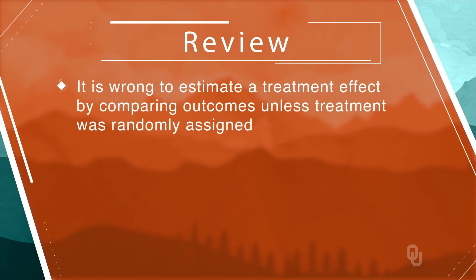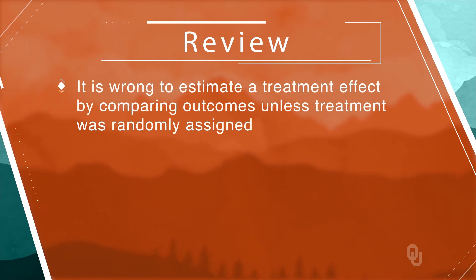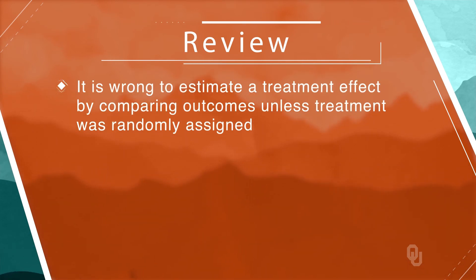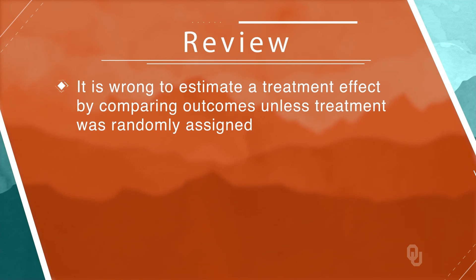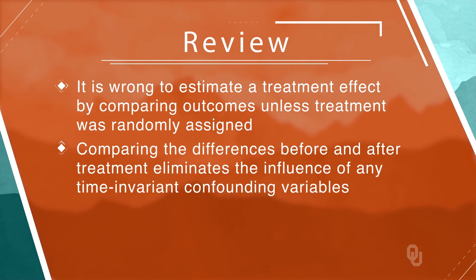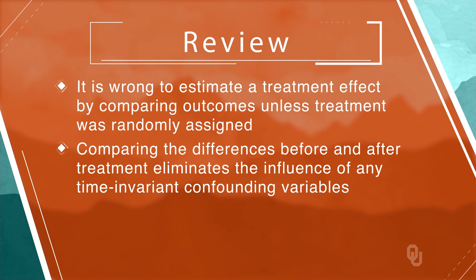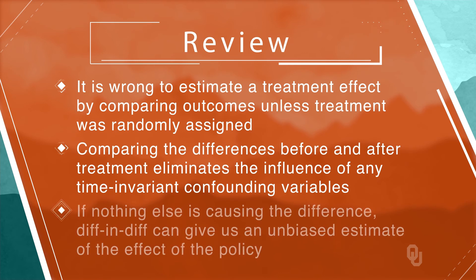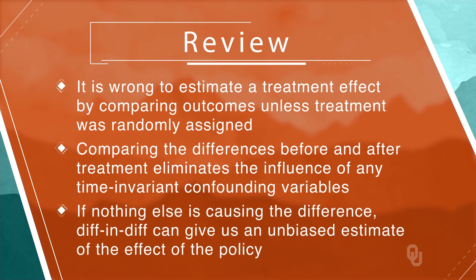We know it is generally going to be wrong to estimate a treatment effect by comparing outcomes between the treated and control groups, unless treatment was randomly assigned. But comparing the differences between the treated and controls before and after treatment eliminates the influence of any time-invariant confounding variables. And if nothing else is causing the difference between the groups to change, this technique — which we call DID — can give us an unbiased estimate of the effect of the policy or treatment we are studying.